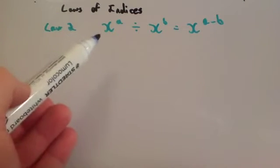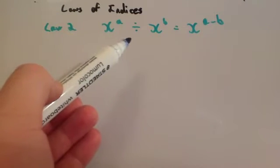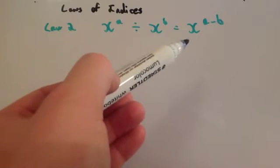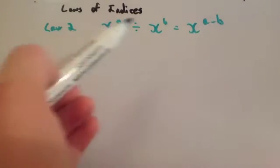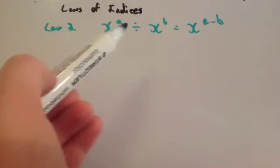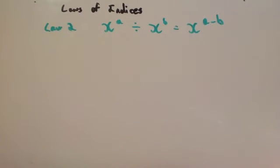Okay, so law 2 is x to the power of a divided by x to the power of b is equal to x to the power of a minus b. In other words, you subtract the powers, so you do a subtract b to find the new power.